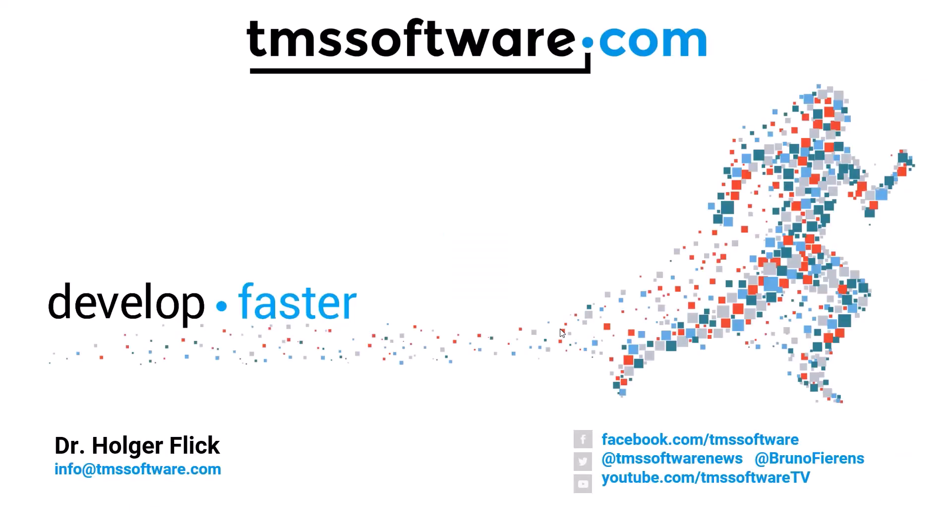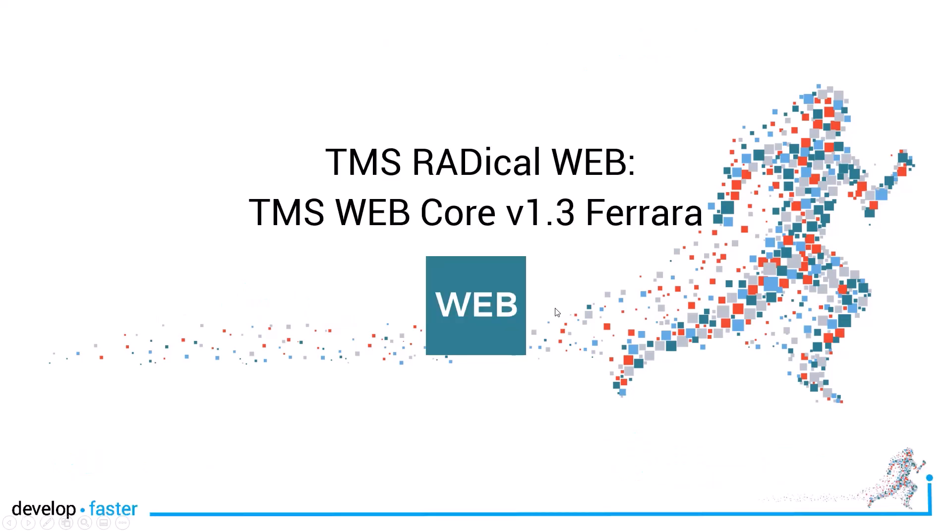Welcome to a video of the new features of TMS WebCore version 1.3 Ferrara. TMS WebCore is the radical web framework from TMS. Even though it is just a subversion number, version 1.3 Ferrara has many improvements that will make your life much easier working with TMS WebCore, so do not hesitate to upgrade if you already have a license, and maybe these features will trigger your interest to invest in building your future web applications with TMS WebCore.